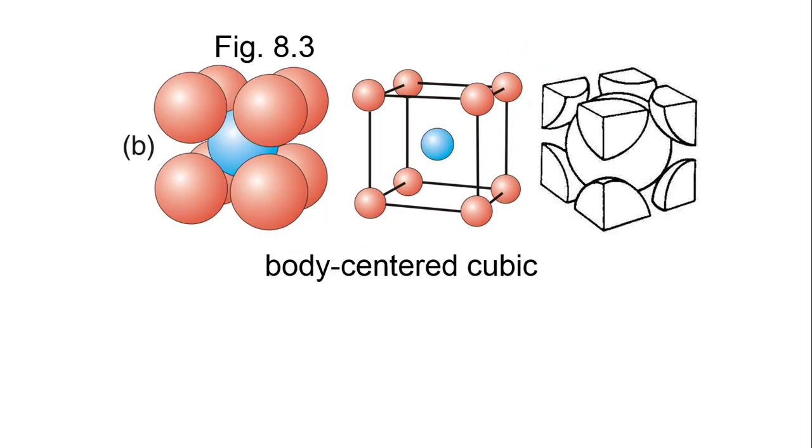Here is the body-centered unit cell. On the right is a space-filling model showing that all of the body atom is inside, but again only one-eighth of each corner atom is inside. Eight corner atoms, each contributing one-eighth, and one body atom completely inside, total to a unit cell stoichiometry of two for the body-centered cubic cell.